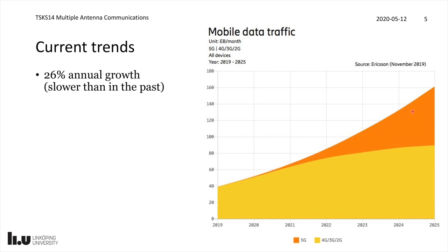We can see that the yellow part here is what is delivered by 4G, 3G, and 2G, and that one is flattening out to some extent. But the new 5G technology, which started to be deployed in 2019, will take over and be the main contributor to the growth.